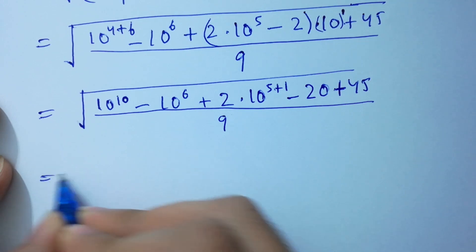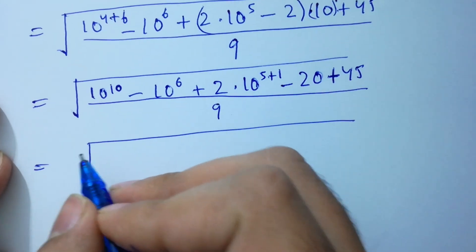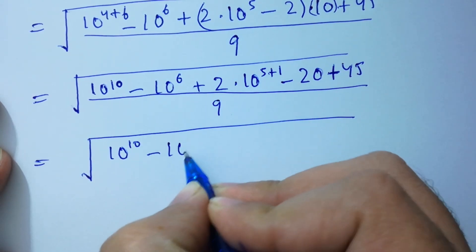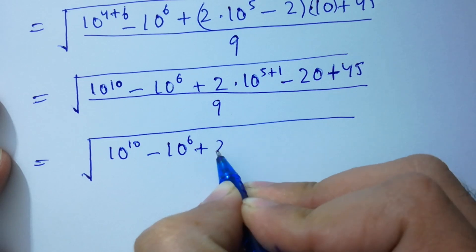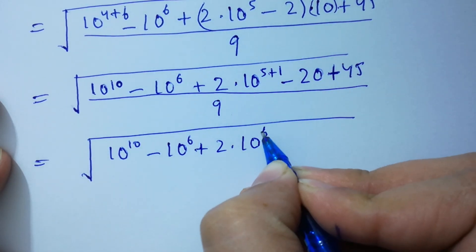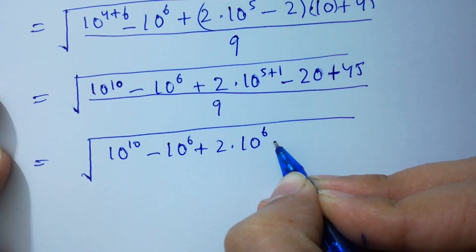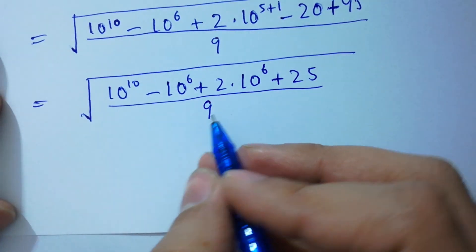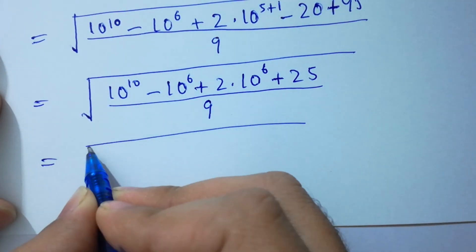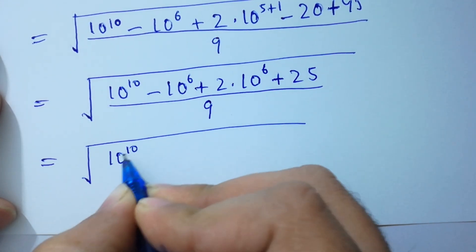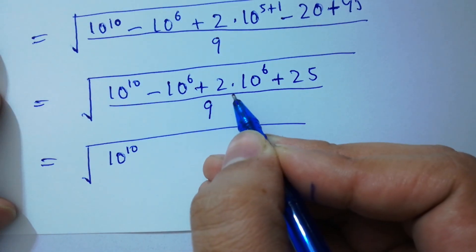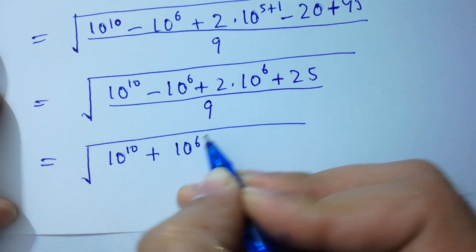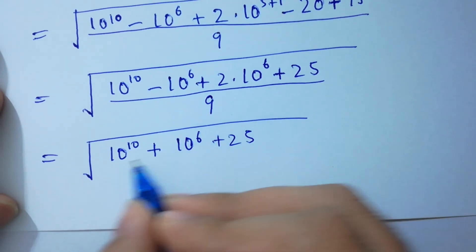We have ten to the power 10, minus ten to the power 6, plus 2 times ten to the power 5 plus 1 — that's 6 — next, minus 20 plus 45 will be here plus 25, over 9. Next, ten to the power 10 as it is, and minus ten to the power 6 plus 2 times ten to the power 6 — 2 minus 1, we get 1 — so we can write here plus ten to the power 6, plus 25 as it is, over 9.